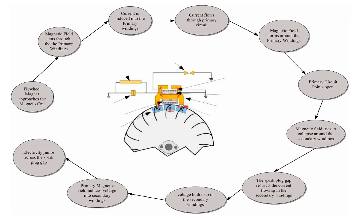This is the operational description for a magneto ignition on a Briggs & Stratton engine. The one we're using is a five horsepower Briggs & Stratton engine.